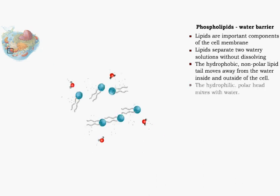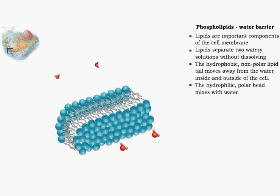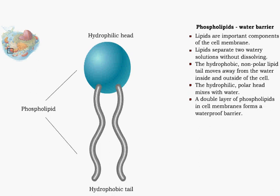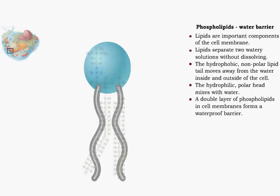Phospholipids have non-polar tails made up of fatty acids. The head of the molecule is made up of a polar or charged phosphate group. Because the head is polar, it mixes with water. It is hydrophilic, or water-loving.